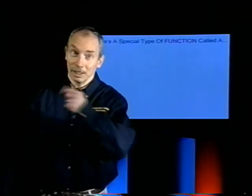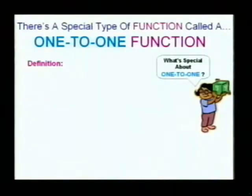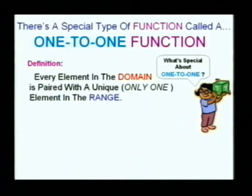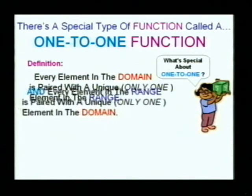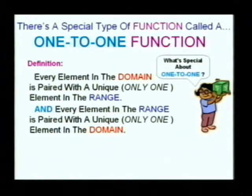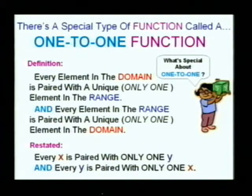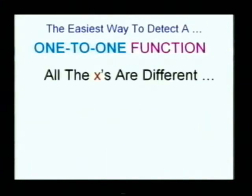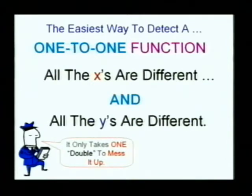Now, there's a special type of function — a really, really useful one — called a one-to-one function. What makes something a one-to-one function? Every element in the domain is paired with only one element in the range — that's the function part. But in addition to that, every element of the range also has a unique element of the domain. In other words, every x is paired with only one y, AND every y is paired with only one x. Simplified: all the x's are different — that makes it a function — and all the y's are different — that makes it a one-to-one function.